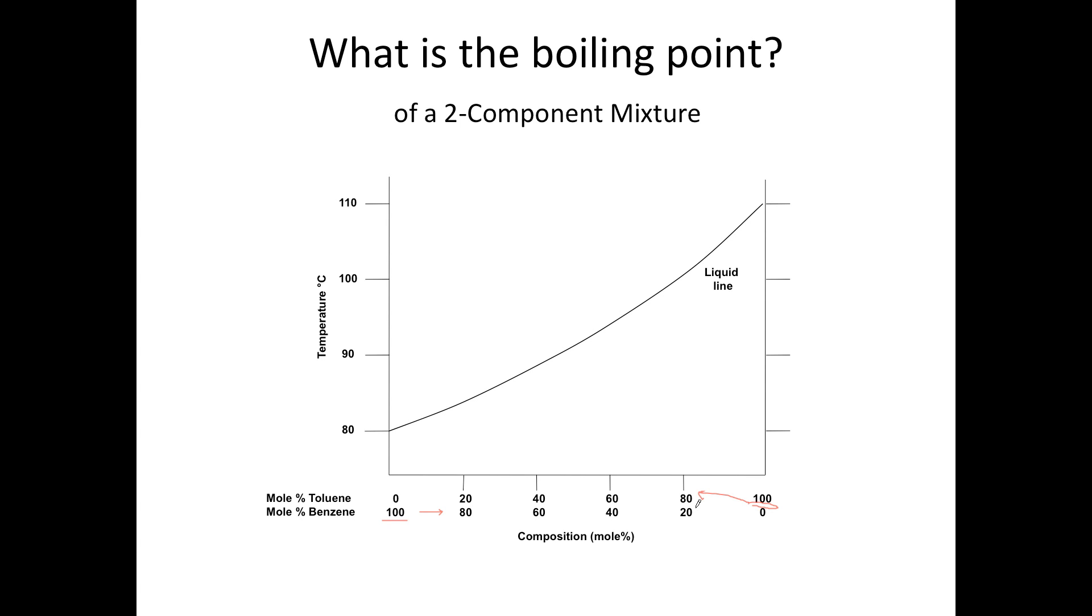Along the y-axis, we have temperature, and that line, called the liquid line, is actually the boiling point of any mixture in this two-component mixture. So if you have a one-to-one mixture of benzene and toluene, you find that on the x-axis, follow that up to the liquid line, and then read the boiling point from the y-axis. And that's about 92 degrees.